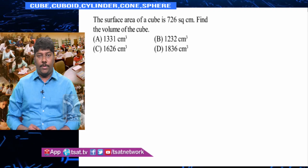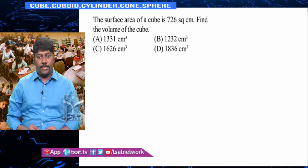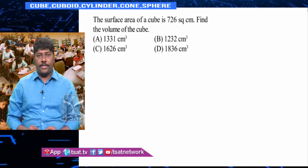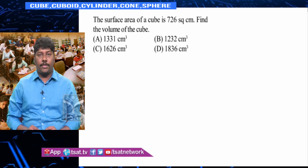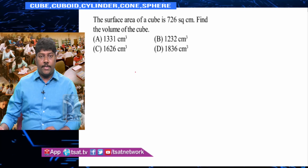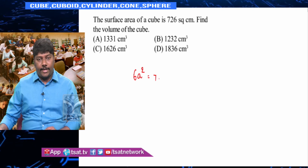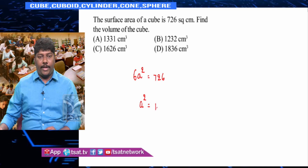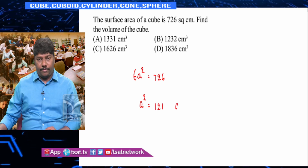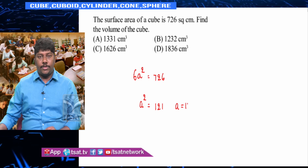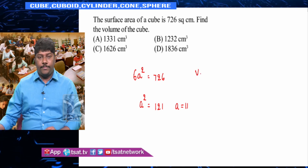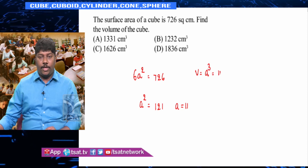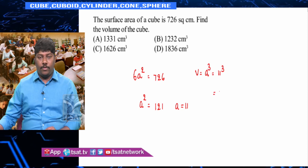The surface area of a cube is 726 cm². Find the volume of the cube. He did not mention which surface area, whether lateral or total, so we will take the total surface area: 6a² = 726, so a² = 121, therefore a = 11. Volume of the cube is a³ = 11³ = 1331.